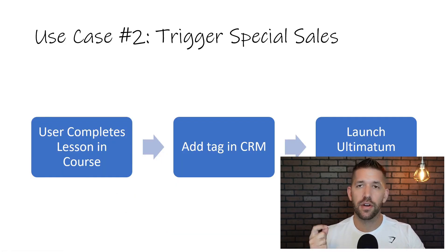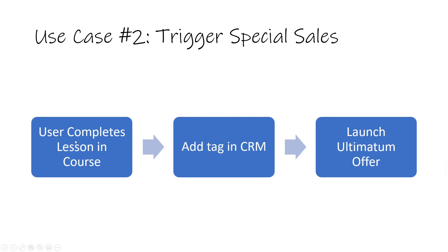Use case number two is being able to trigger special sales whenever you want. When a user completes a specific lesson in your course — maybe the last lesson or a critical one leading into your next product — you can create a two-step automation. Step one adds them to a specific tag in your autoresponder, which could initiate an email sequence perfectly linked with a timer on Thrive Ultimatum. You could have a countdown timer that starts as soon as they complete a lesson in your course.